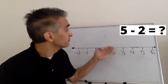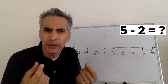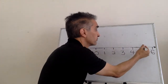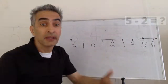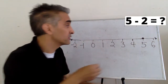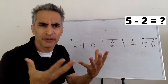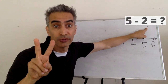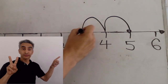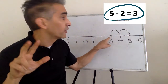Another example problem: 5 minus 2. We start with 5 — there's the 5. Next, this subtraction sign means move to the left. How many spaces? 2. 1, 2. 5 minus 2 equals 3.